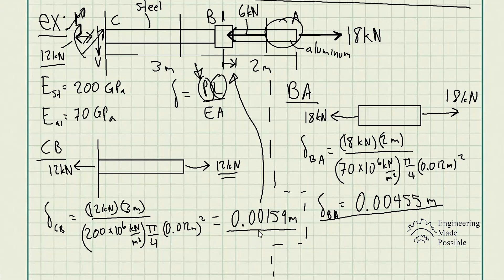So first we solved how much it deformed at point B, 1.59 millimeters, it deformed at this point. Now at point A, the rod itself deformed 4.55 millimeters. But to find the total deflection or how much it deformed at the end, we would have to add both of the deformations.